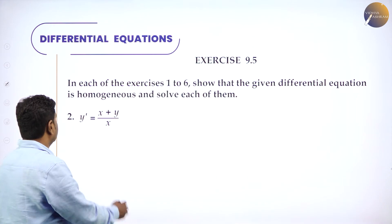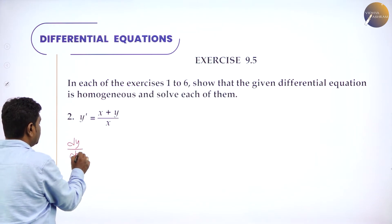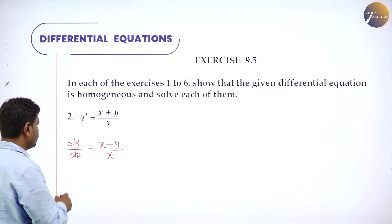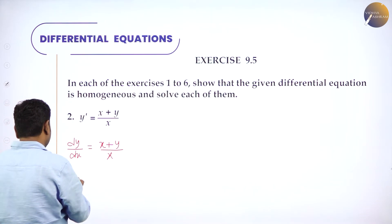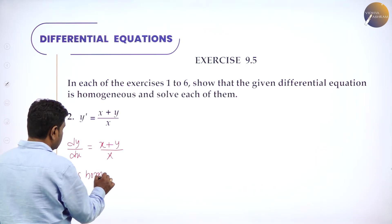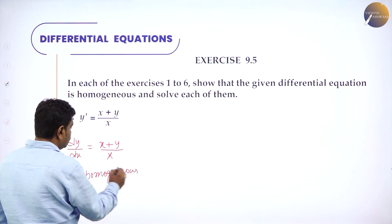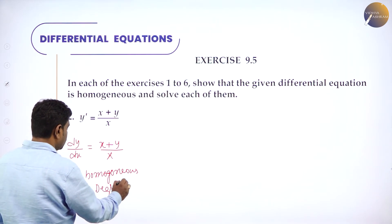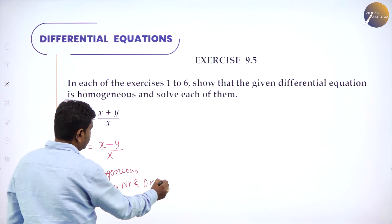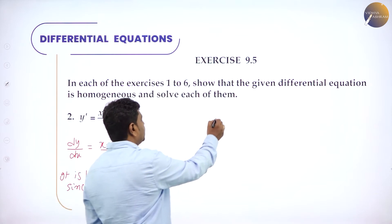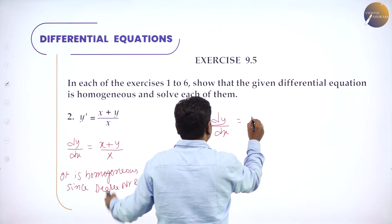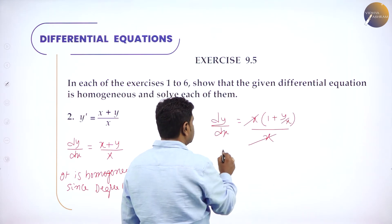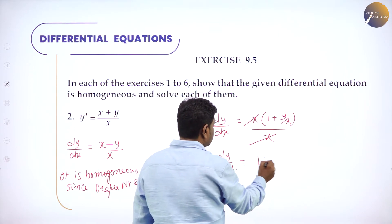Next problem: y′ = (x + y)/x. You can see both numerator and denominator have the same degree, therefore it is homogeneous. Take highest degree term x common in the numerator: gives 1 + y/x. Denominator already has x; these cancel. So dy/dx = 1 + y/x. Call this equation 1.